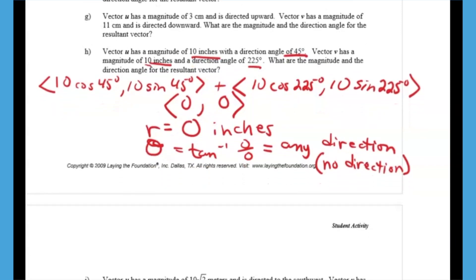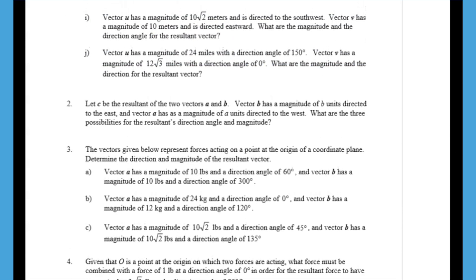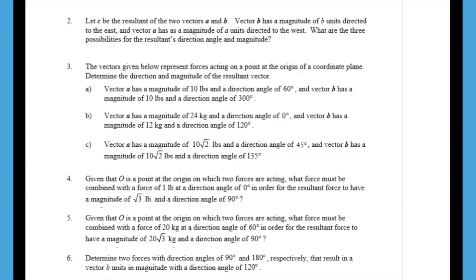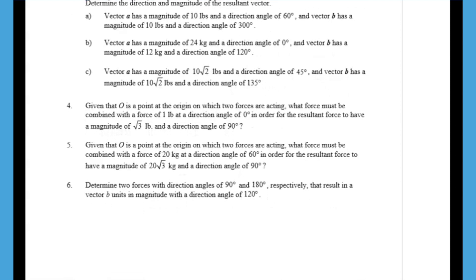To give a heads up on other problems in this lesson: number two asks students to think abstractly about vectors A and B pulling in opposite directions and the three possibilities for the resultant. Numbers four and five give the resultant and one component vector, and students must find the other — you may want to prompt the class to think about how to approach that. Number six is more advanced, and you can decide whether to assign it to your class.